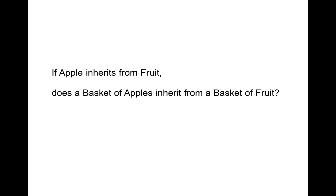Covariance and contravariance boils down to an answer to this very simple question: if Apple inherits from Fruit, does a basket of apples inherit from a basket of fruit? I've used basket here as just an example of a collection. So this is talking about supertypes and subtypes, inheritance and collections, and how it's all related together.